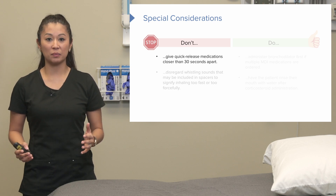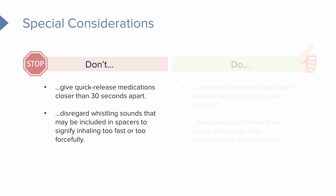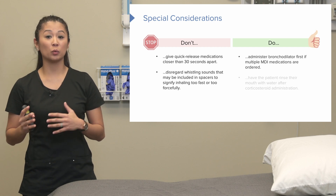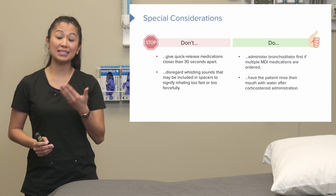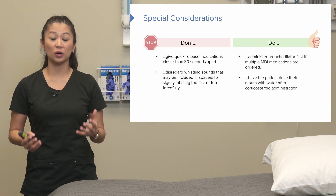Some important considerations: do not give a quick-release medication closer than 30 seconds apart. Do not disregard any whistling sounds from a spacer — this means the patient is inhaling too quickly and forcefully; remember to inhale slowly and deeply. If multiple medications are given, administer the bronchodilator first to help decrease inflammation so the patient gets maximum benefit. Lastly, don't forget to have the patient rinse their mouth with water after using a metered dose inhaler, because medication can linger in the mouth and allow bacteria to accumulate.